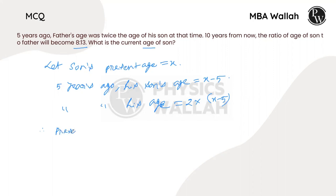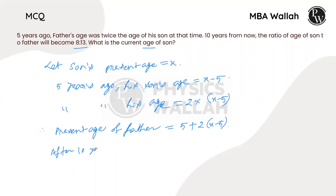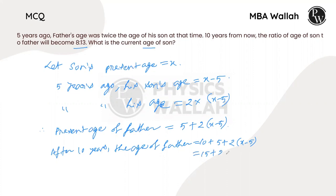The present age of father equals 2(x-5) plus 5, since 5 years are added back. Therefore, after 10 years, the age of father will be 10 plus 2(x-5) plus 5, which equals 15 plus 2(x-5), simplifying to 2x plus 5.